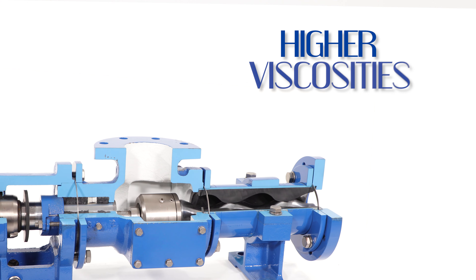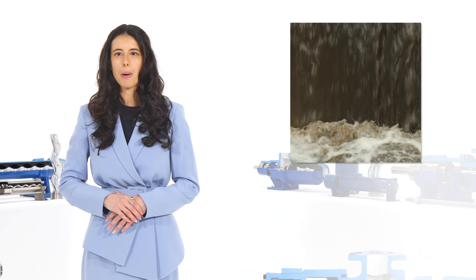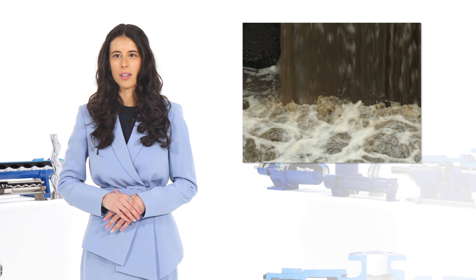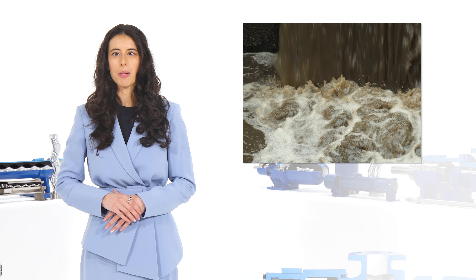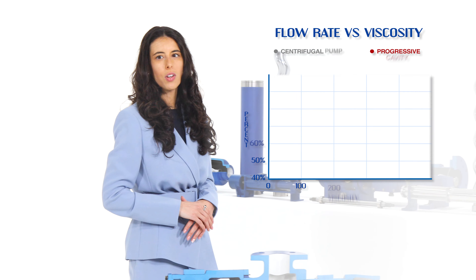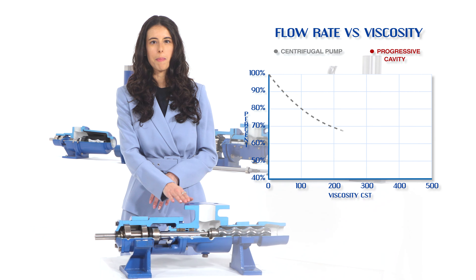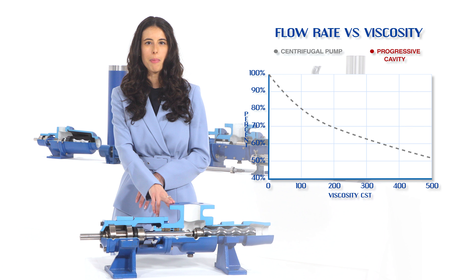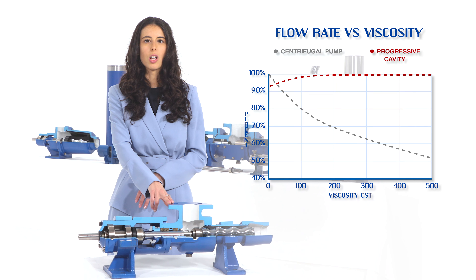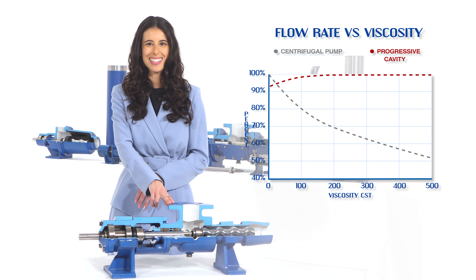Higher viscosities than water. When the liquid being pumped has a thicker viscosity than water, the progressive cavity pump is the right choice. When compared to centrifugal or other types of positive displacement pumps, a PC pump can handle much higher viscosity with ease due to its low internal velocities and large cavities.